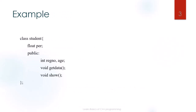Let us see an example of how to declare the class. The class keyword is followed by the class name student, which becomes a type identifier used to declare instances of the class. The class contains two data members and member functions. Remember that data members are private by default while member functions are public by default. The function getData is used to assign values to member variables, and void show is used to display the values. The class is terminated with a semicolon.